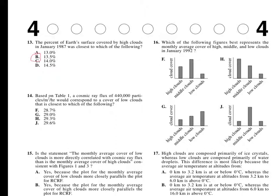Let's go to the next question, 14. Based on table 1, so we're going to go to table 1. A cosmic ray flux of 440,000 particles per meter squared per hour would correspond to a cover of low clouds that is closest to which of the following percent? They have 28.7, 29, 29.3, and 29.6.